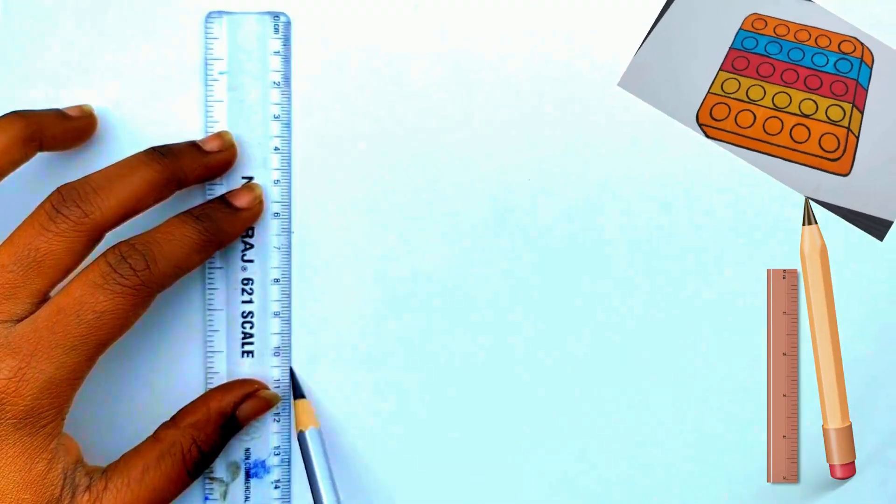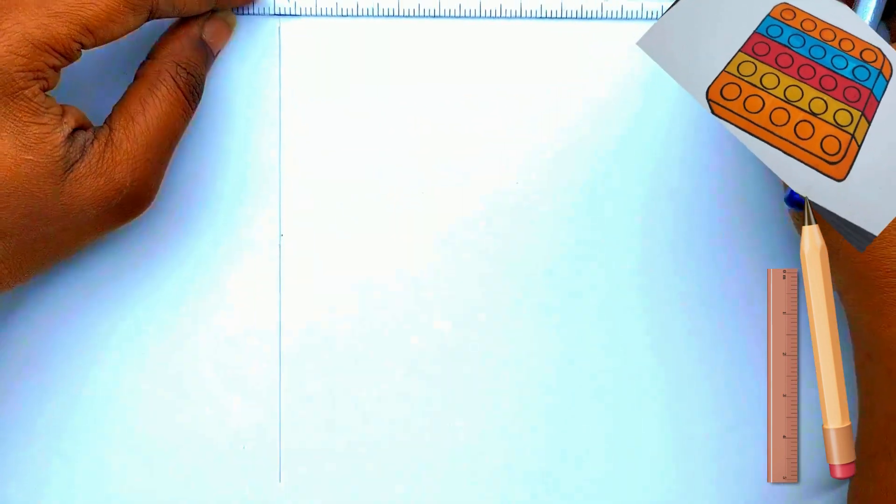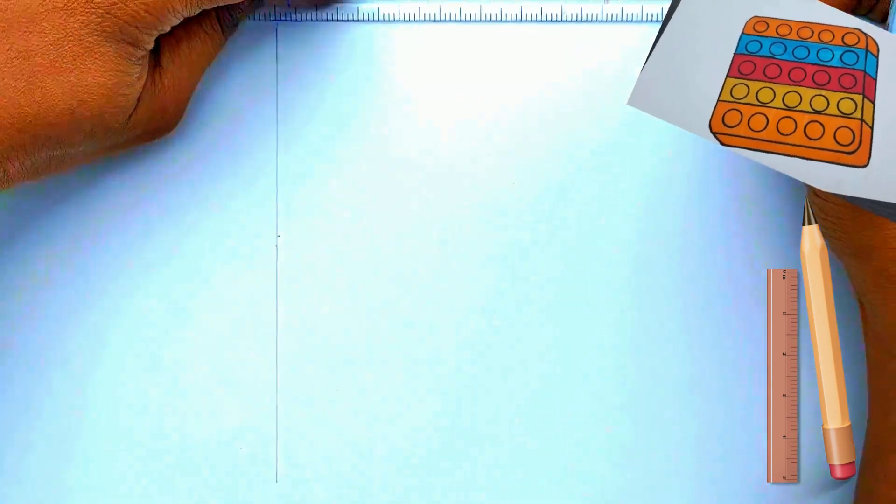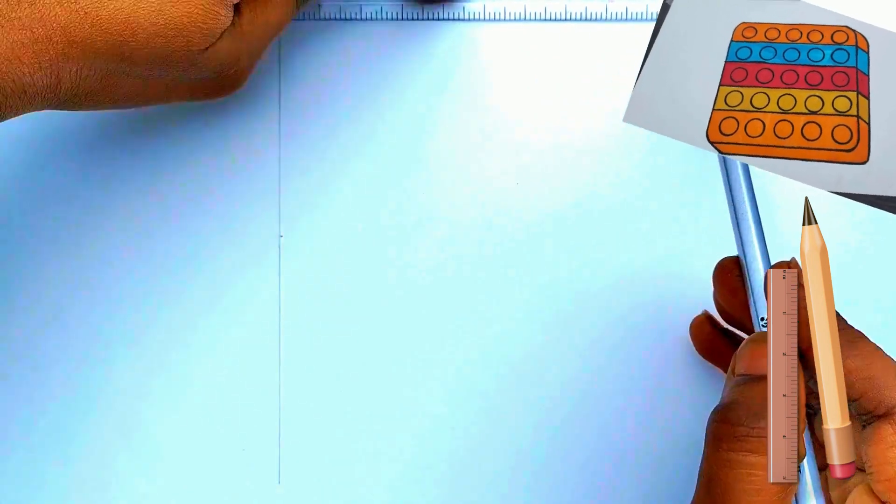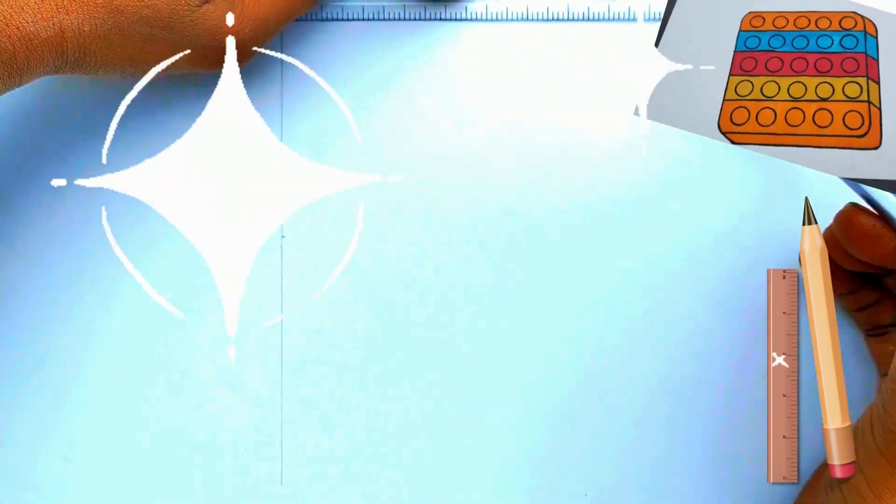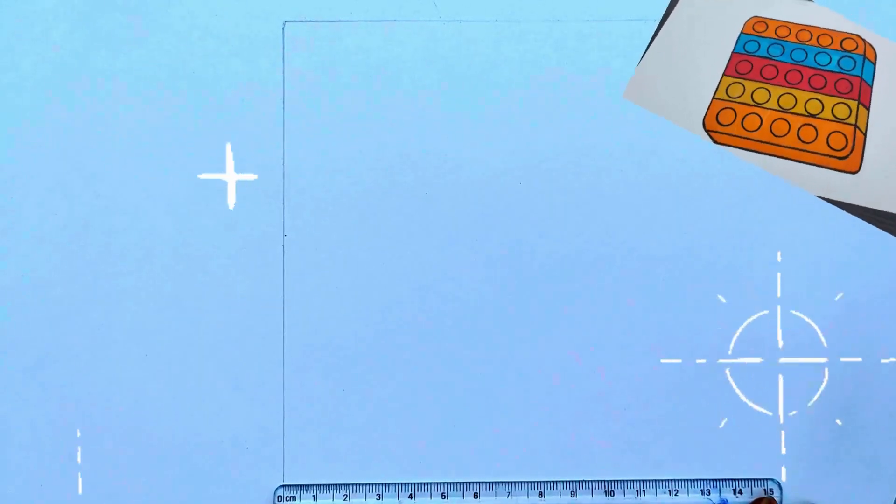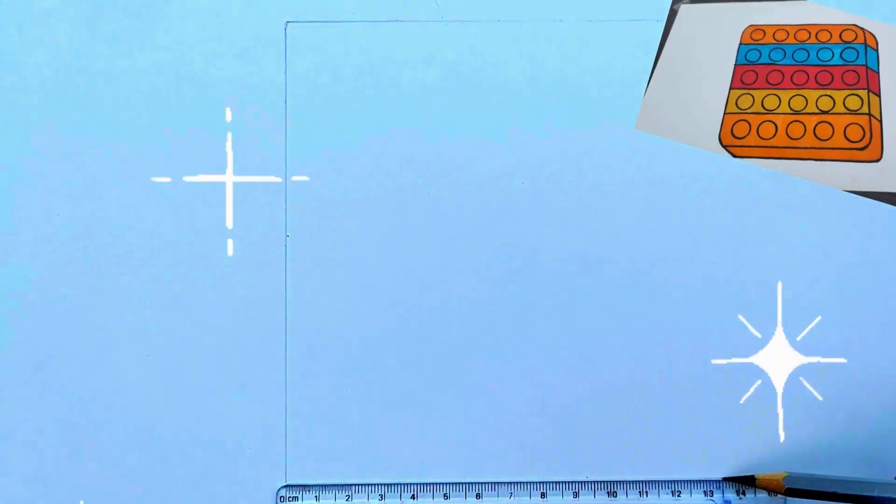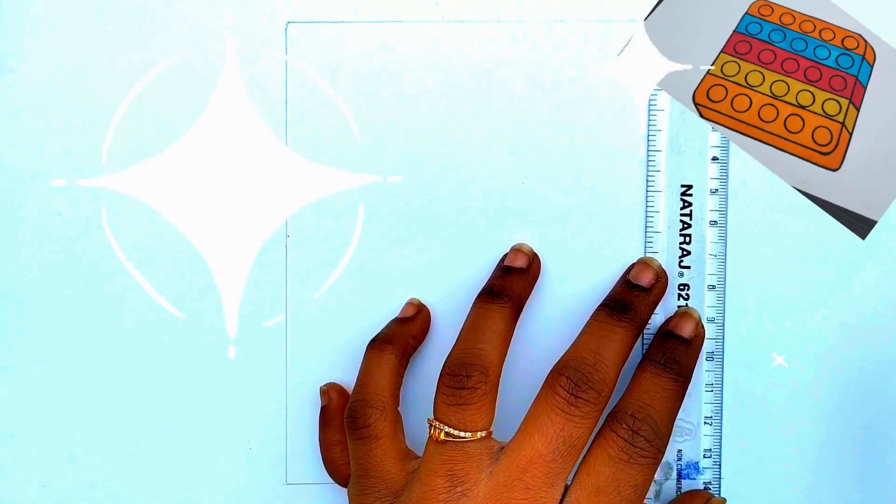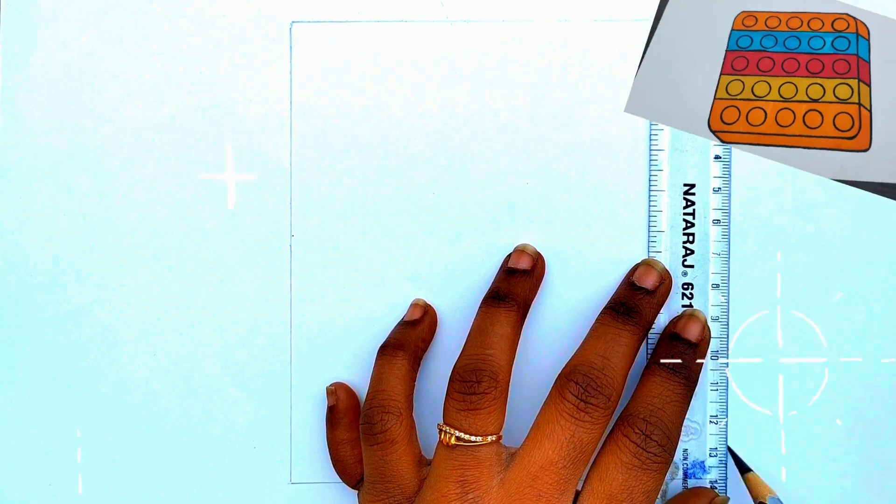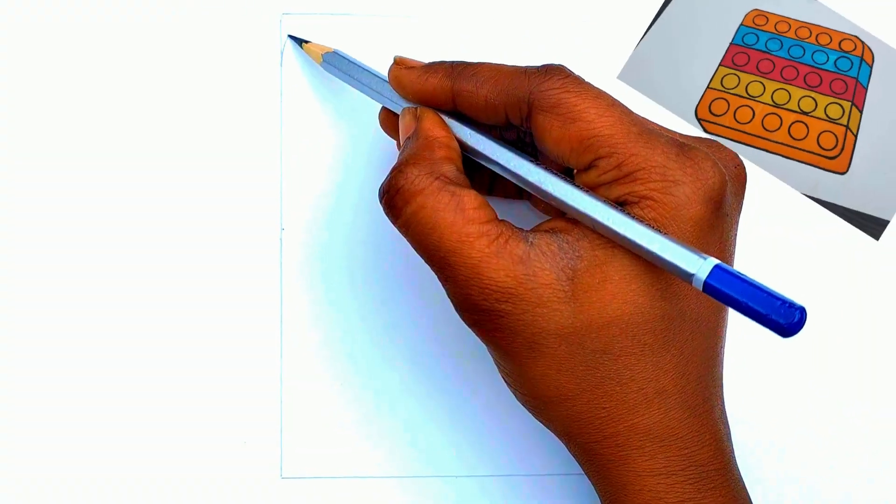Draw a straight line with scale and sleeping line with scale. Now curve the edges.